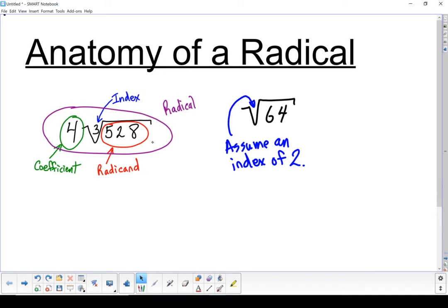If we had an index of 4, it would be a 4th root. If we had an index of 10, it would be a 10th root. It's always referring to it by the index.